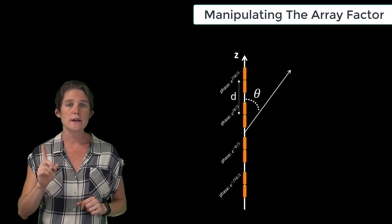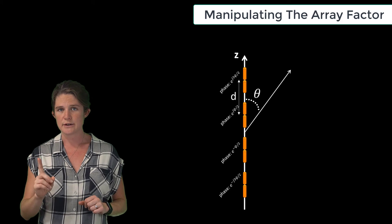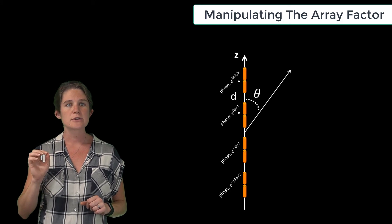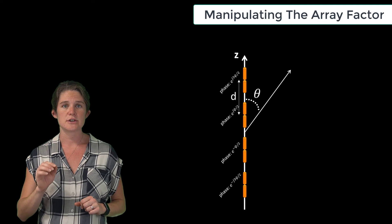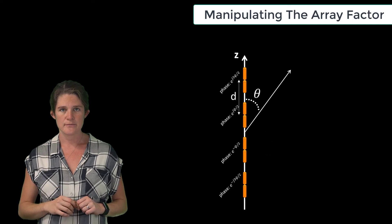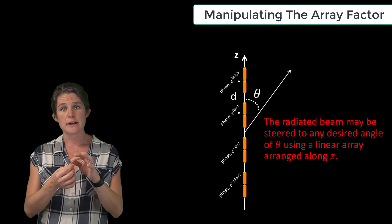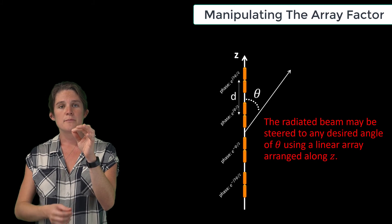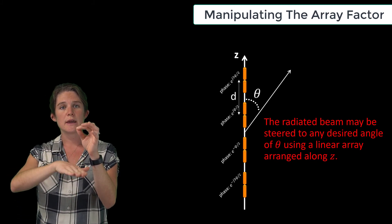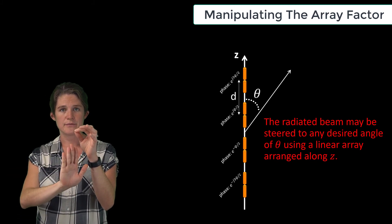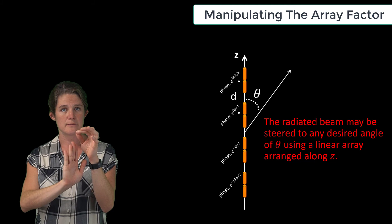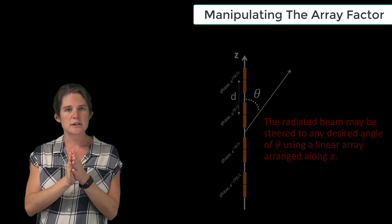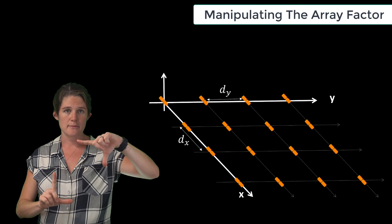What we've seen is that a one-dimensional antenna array — a linear antenna array — enables control of the radiation in the direction of the array. For instance, an array of isotropic radiators arranged along the z-axis may be used to steer the beam in the theta direction, angled from the axis of the array, the z-axis.